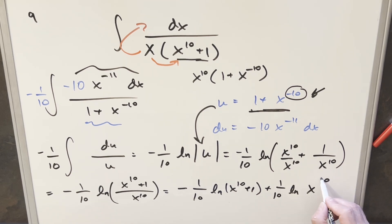But with log properties, we can take this 10 over here in front, but then we have 1 over 10. So that's going to just cancel with this and leave a natural log x.